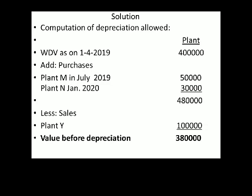Written down value as on 1-4-2019 is 4 lakh. Add purchases: plant M purchased in July for 50,000. Plant N purchased in January for 30,000. Less: sale proceeds of plant Y — 1 lakh. So, the value before depreciation is 3,80,000.